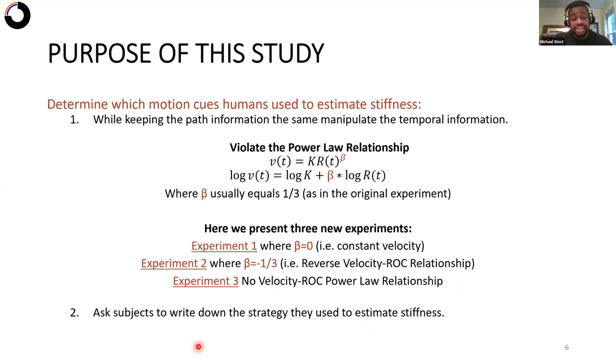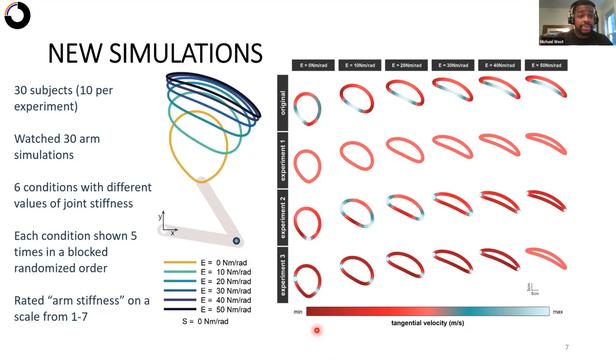The second thing we did was we asked subjects to write down the strategy they used to estimate stiffness. So our new simulations took the same path, but recall the video that I showed you earlier, subjects could not see this path. They could only see the motion of the arm. And we took the experiment where we kept the shoulder stiffness the same, modulated the elbow stiffness.